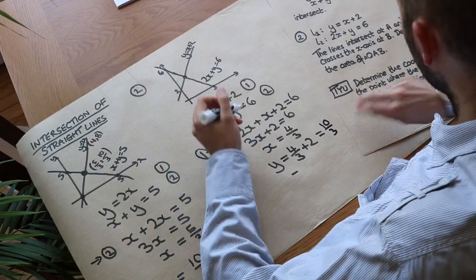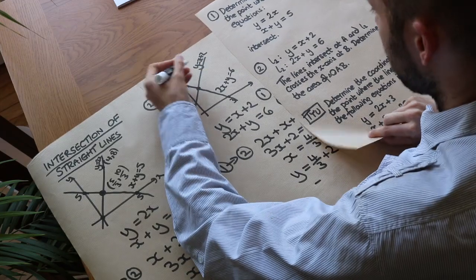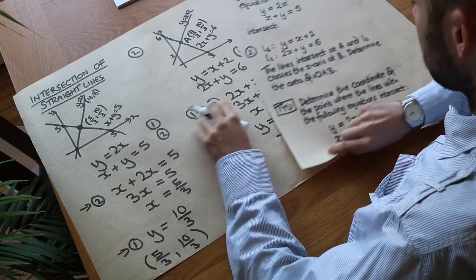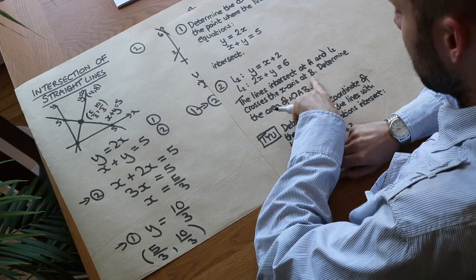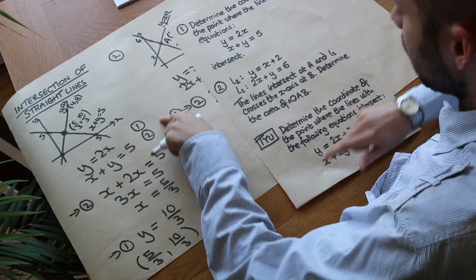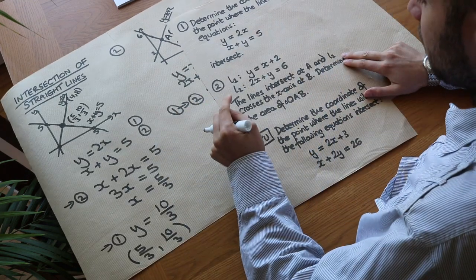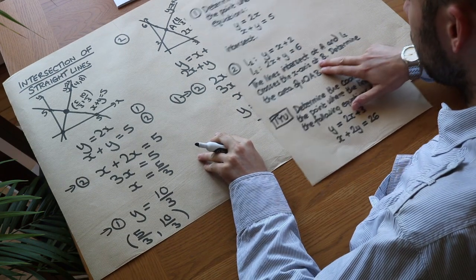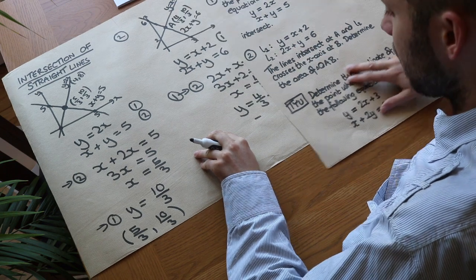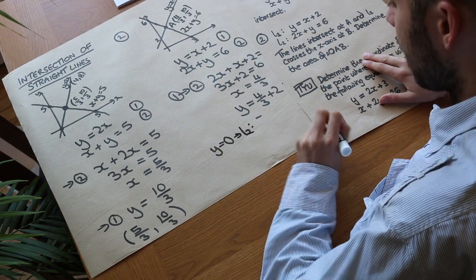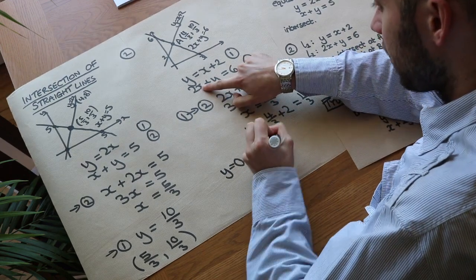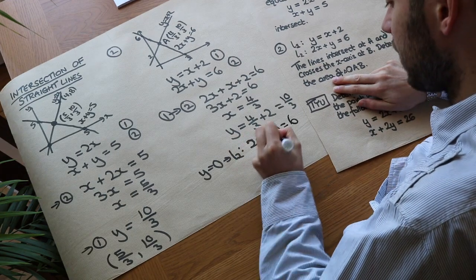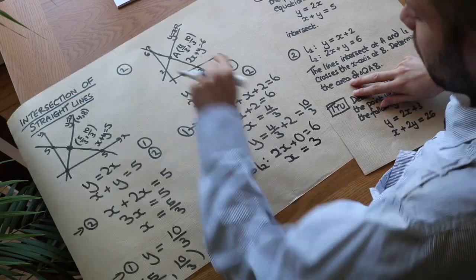So point A has coordinates (4/3, 10/3). Now, L2 crosses the x-axis at B. When a line crosses the x-axis, the y value is 0. Substituting y equals 0 into L2: 2x plus 0 equals 6, so x equals 3. Therefore B is at (3, 0), which we already worked out when sketching.